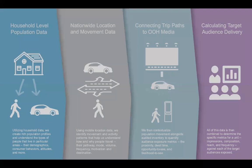We're understanding people's movement across the country by leveraging mobile data to create an activity map of how everybody's moving — the trips they're taking, why they're taking them, and how. Those two things get melded together so we can understand which trips take people in front of which pieces of inventory, and we contextualize that in terms of opportunity to see, dwell time, likelihood to see, and specific metrics like reach and frequency.